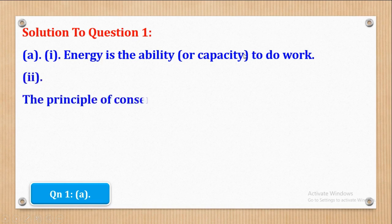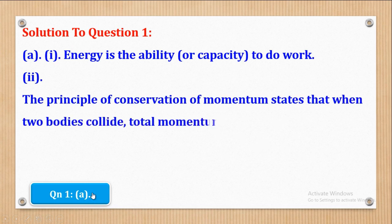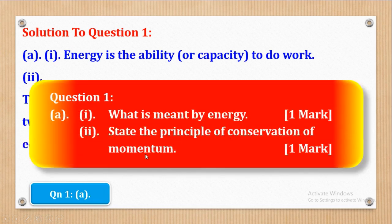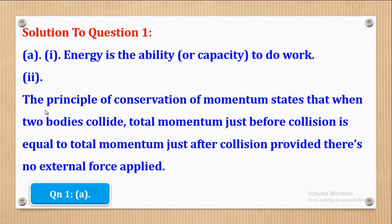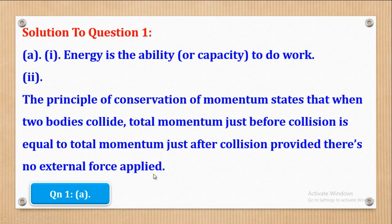For Roman 2, they wanted us to state the principle of conservation of linear momentum. The principle states that when two bodies collide, the total momentum just before collision is equal to the total momentum just after collision, provided there is no external force applied. Most students miss this last condition, but it is very necessary — there should not be any external force applied on the two bodies.